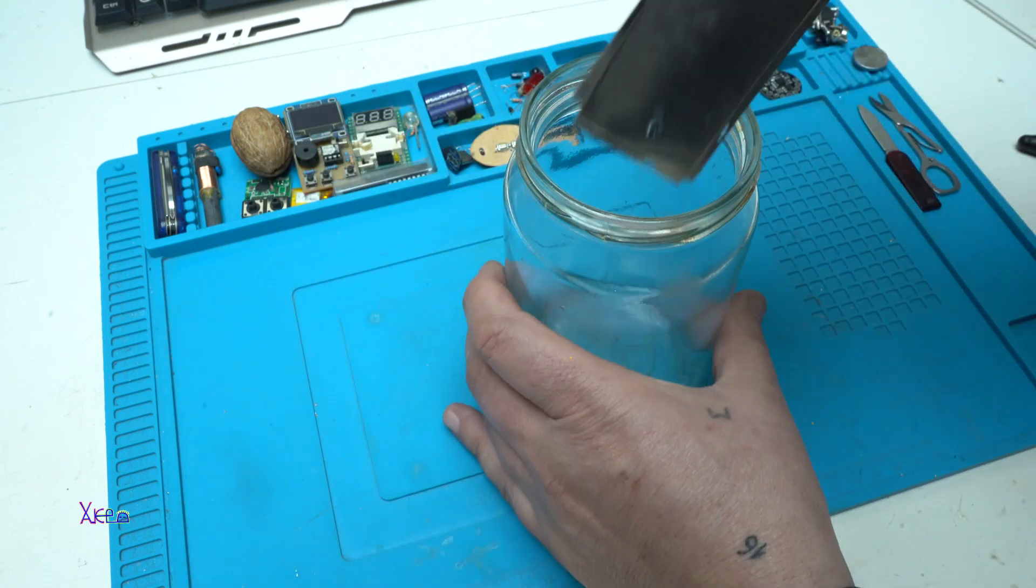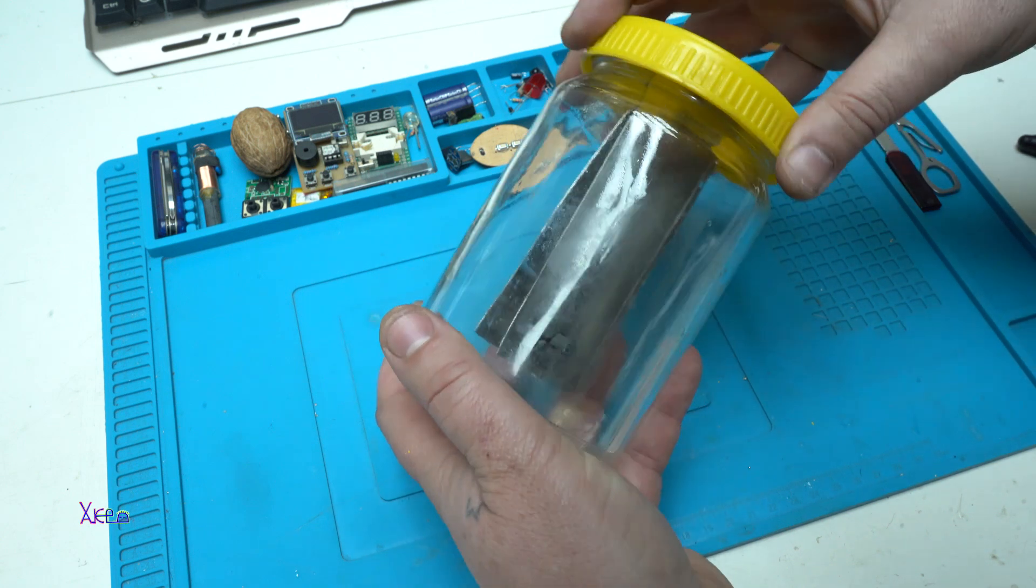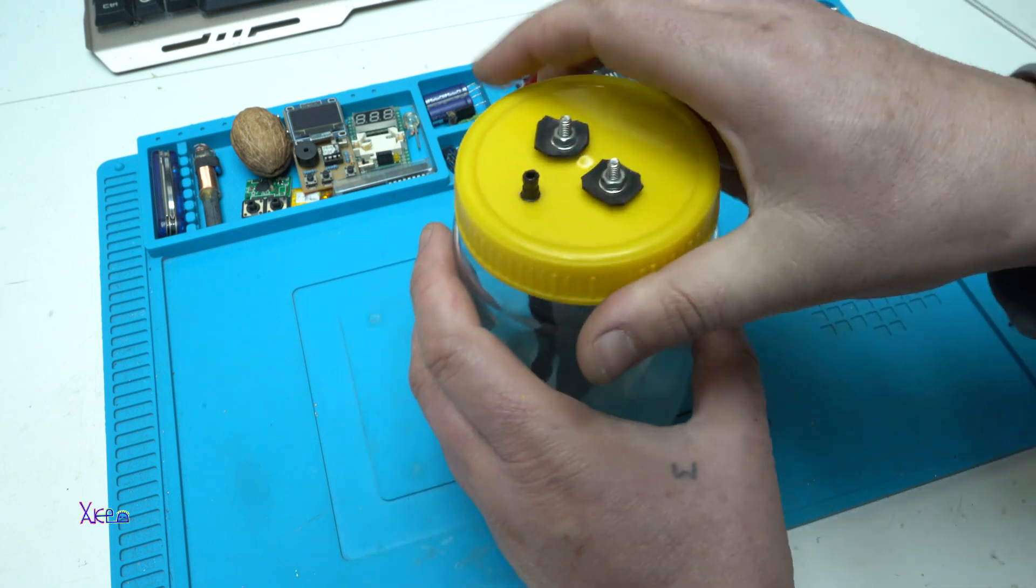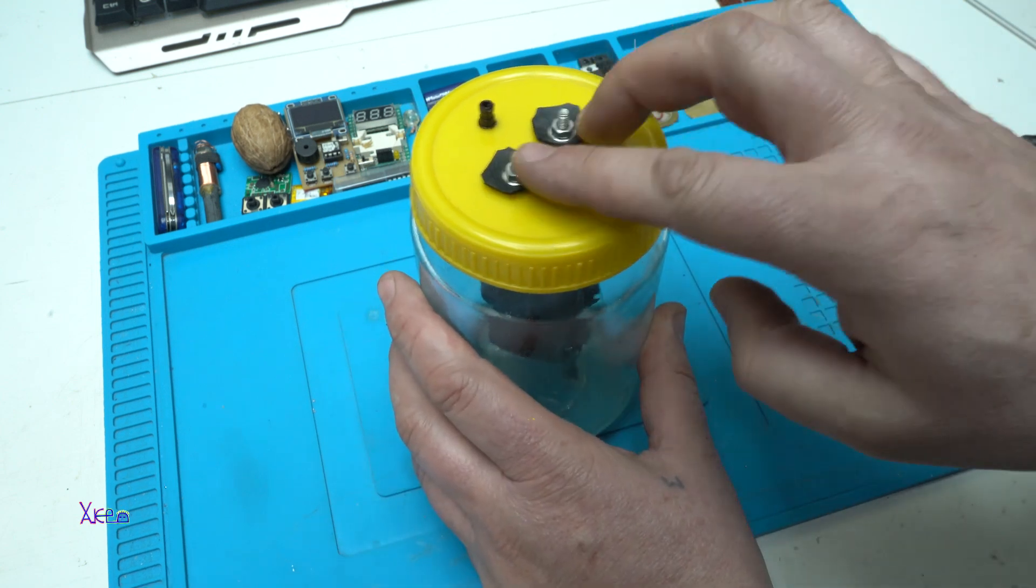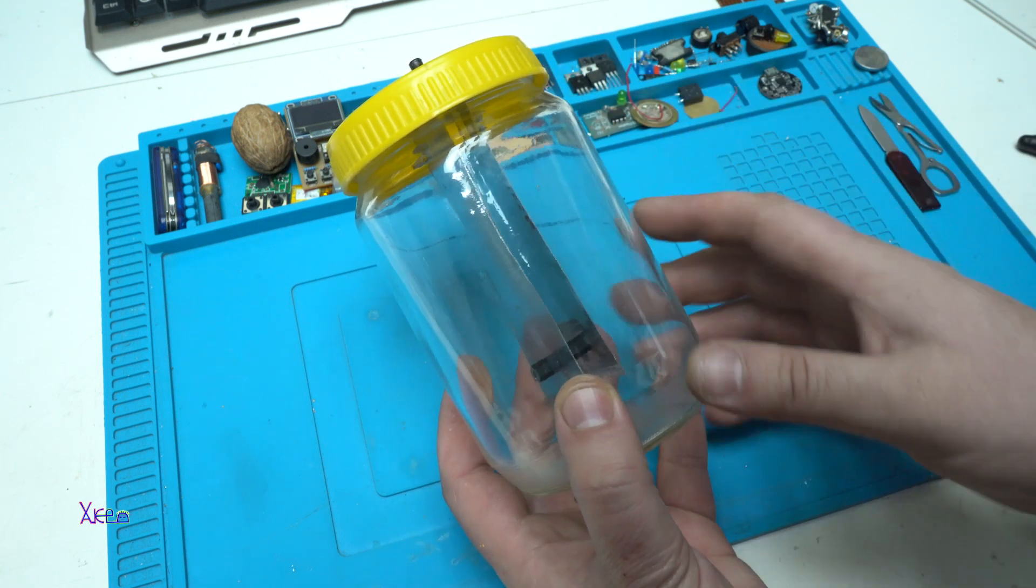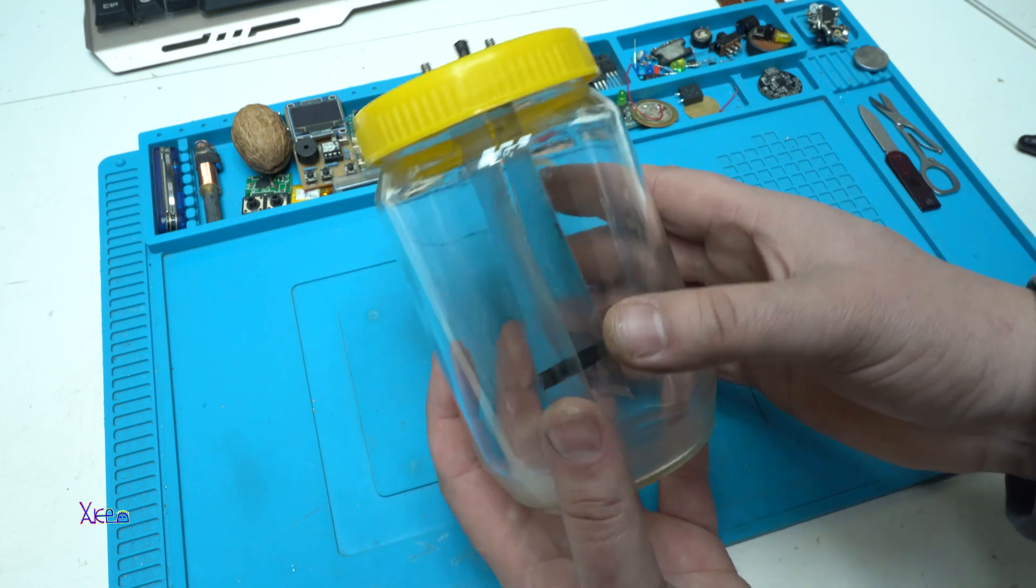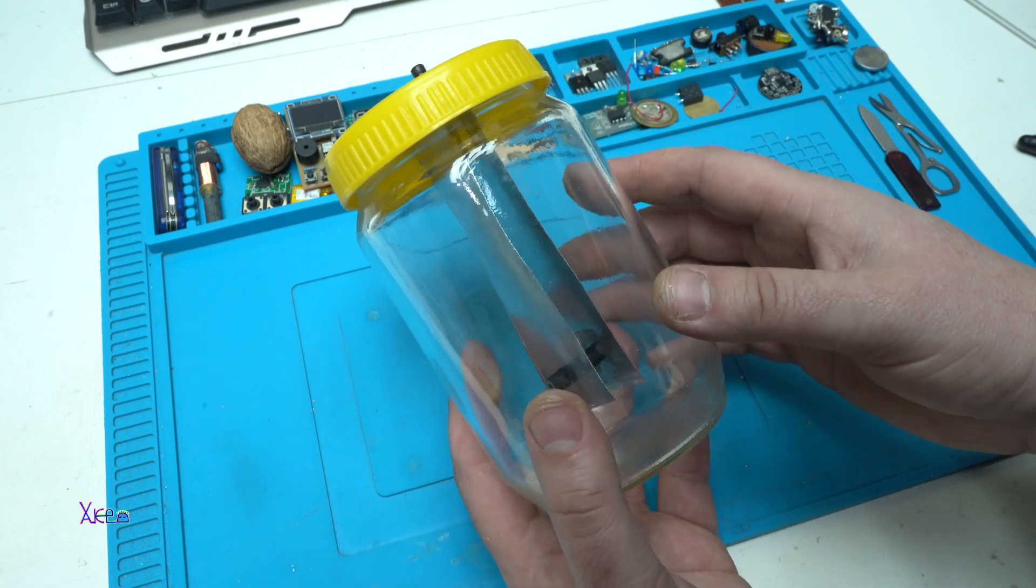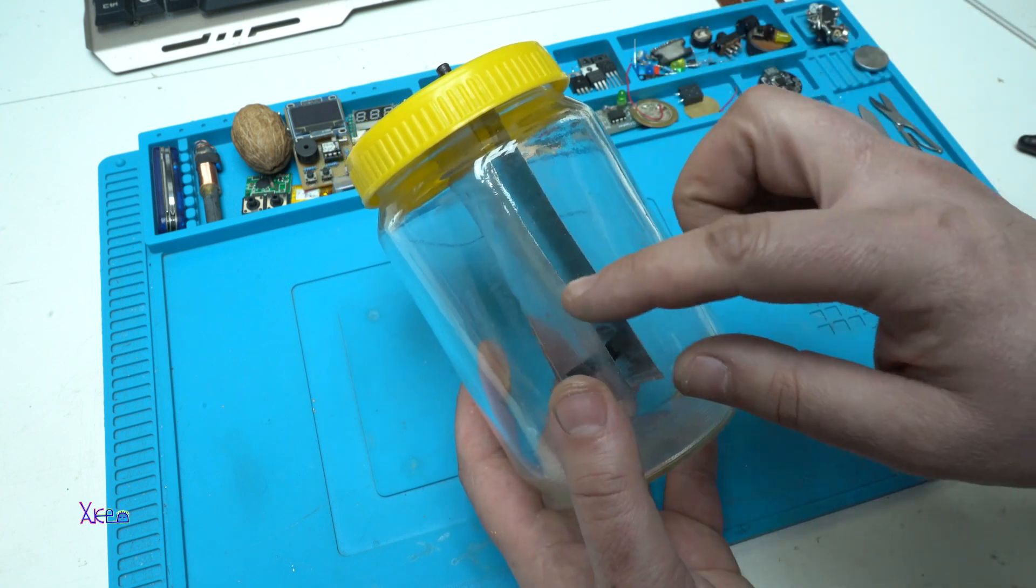This will go into the jar, fill it with water, mix it with baking soda and when you apply positive and negative electricity on these terminals there will be electrolysis and there will be generated some gases. HHO generator that will produce oxygen and hydrogen.